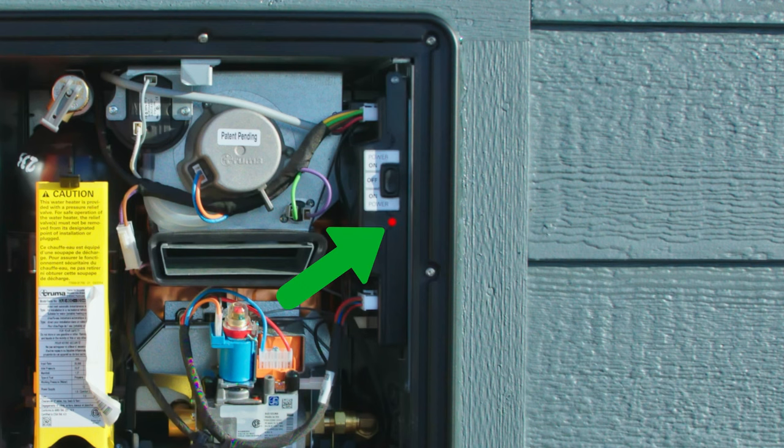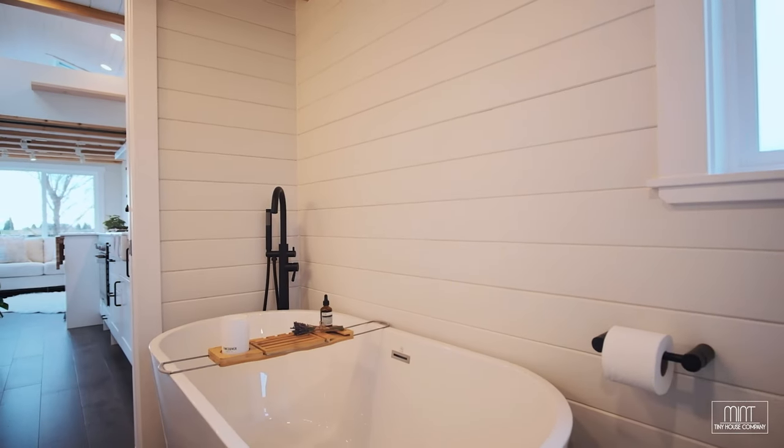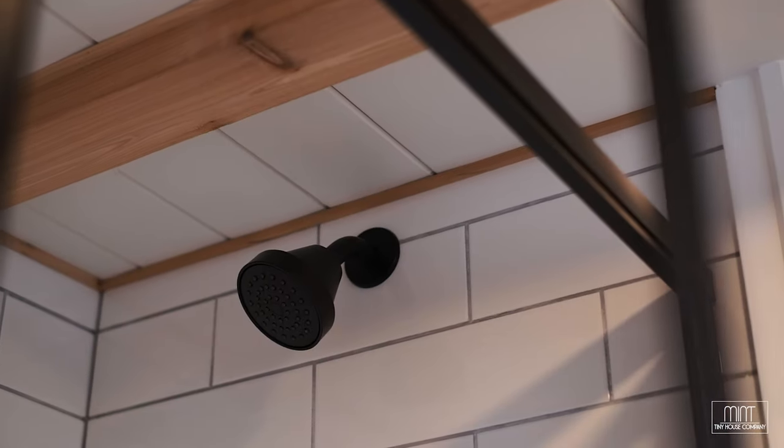A common thing that happens is the water heater will show an error code and may experience an inconsistent flow of hot water. This is typically only an issue for bathtubs and large showerheads which have a higher flow rating. The kitchen and bathroom sink faucets will operate as normal.